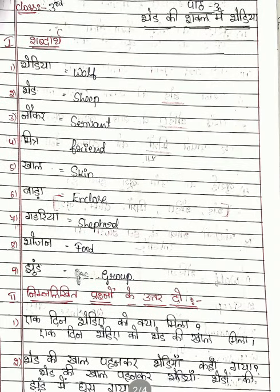Once again I will read for you — listen. Shabdarth: bhediya — wolf; bhed — sheep; naukar — servant; mitra — friend; khaal — skin; baada — enclosed; gadriya — shepherd; bhojan — food; jund — group.